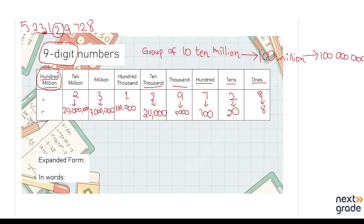Last, we have the 100,000,000 place. We have 5 there, so we write it as 500,000,000. Remember, how many zeros come here? 6 zeros — so we put 6 zeros after 5.